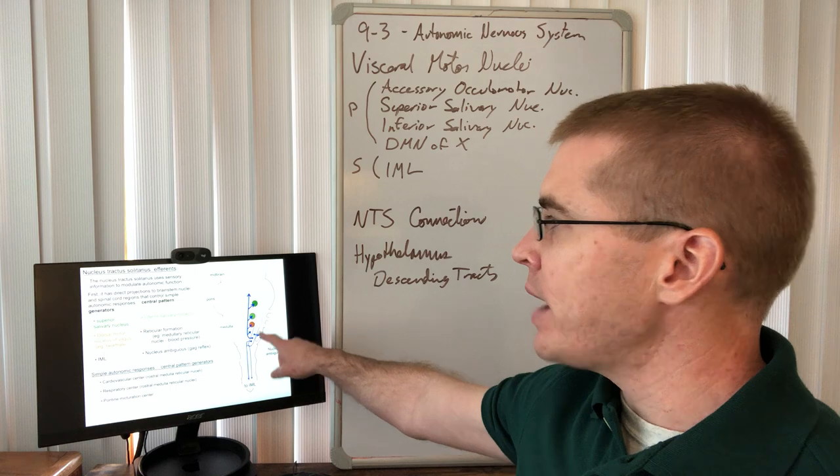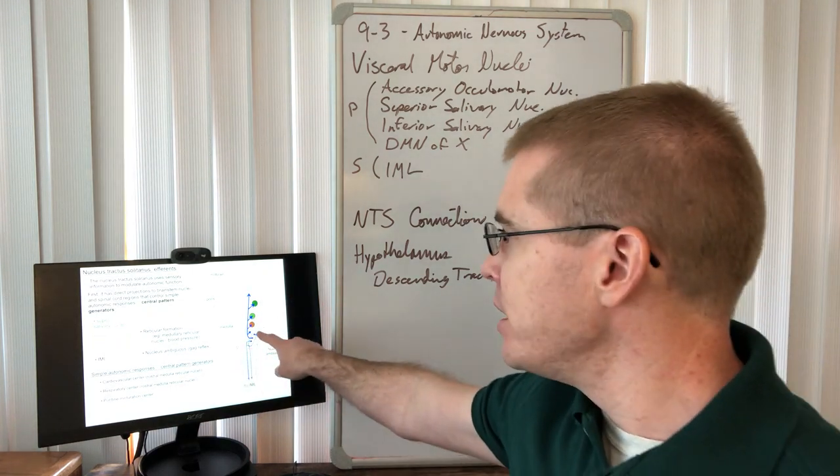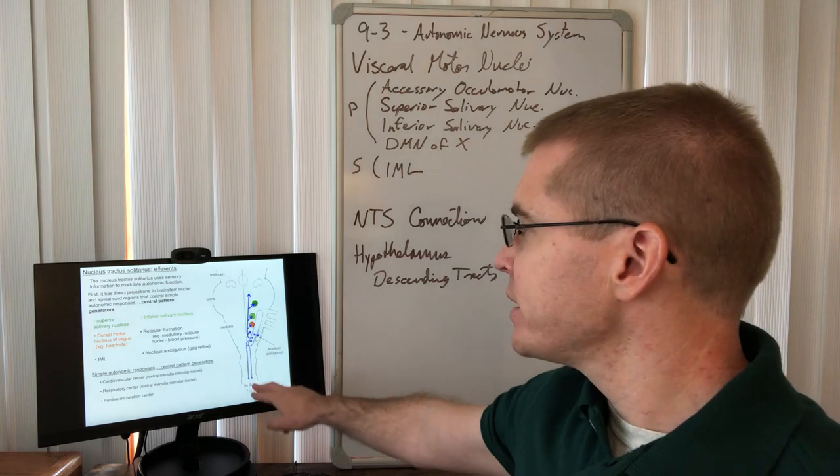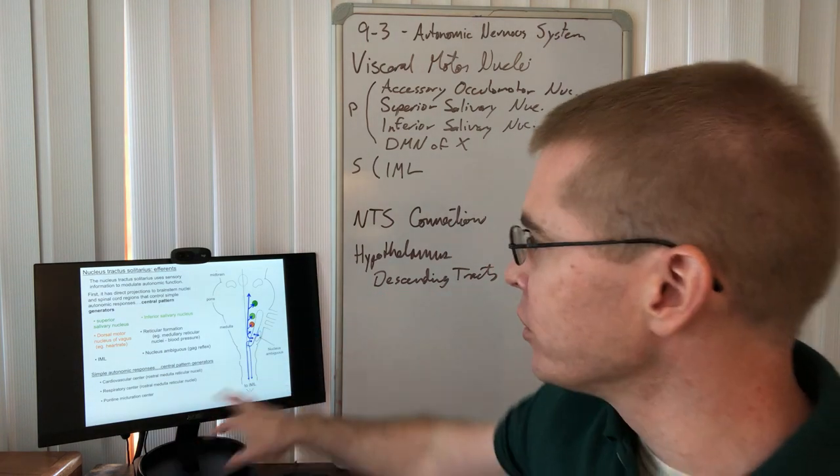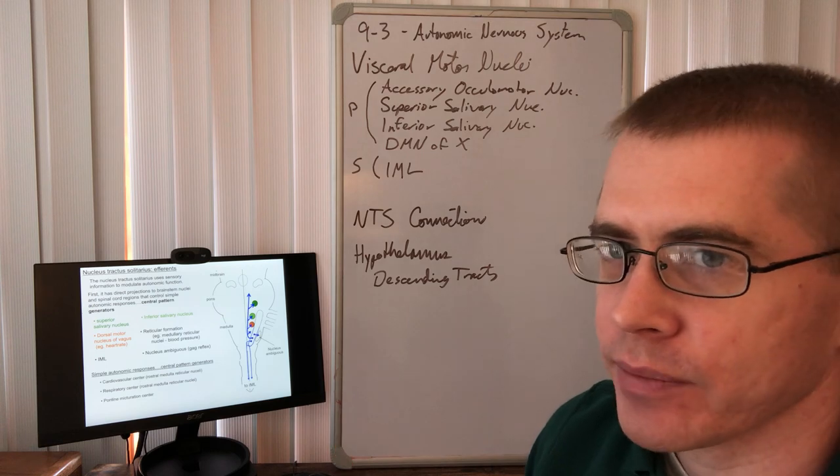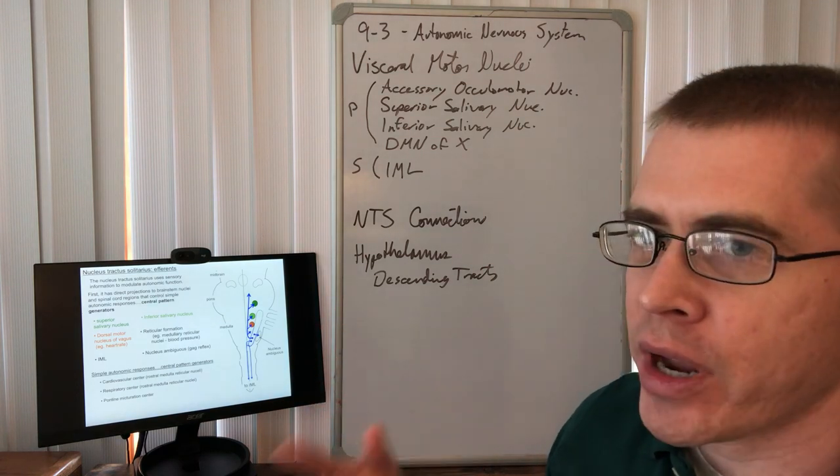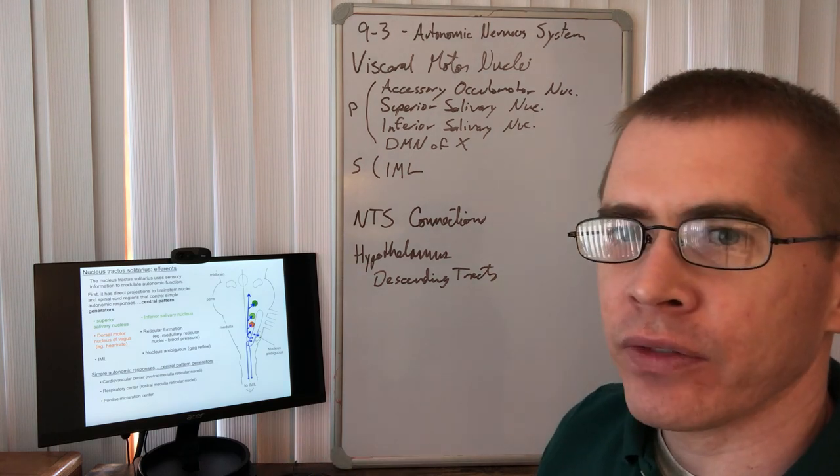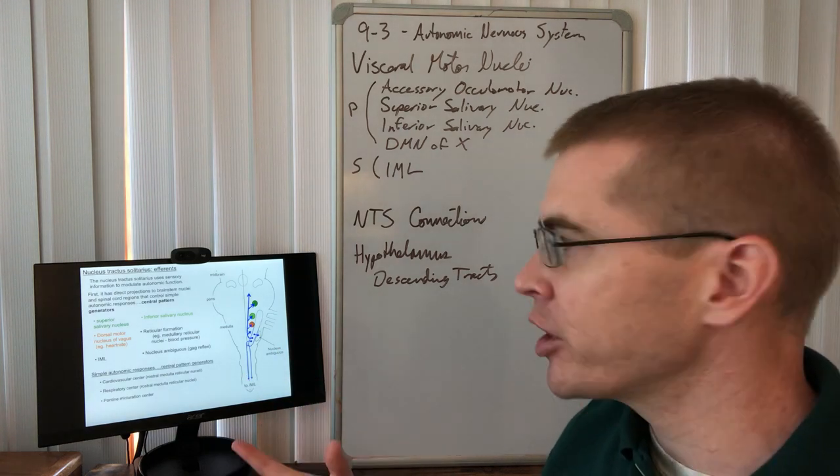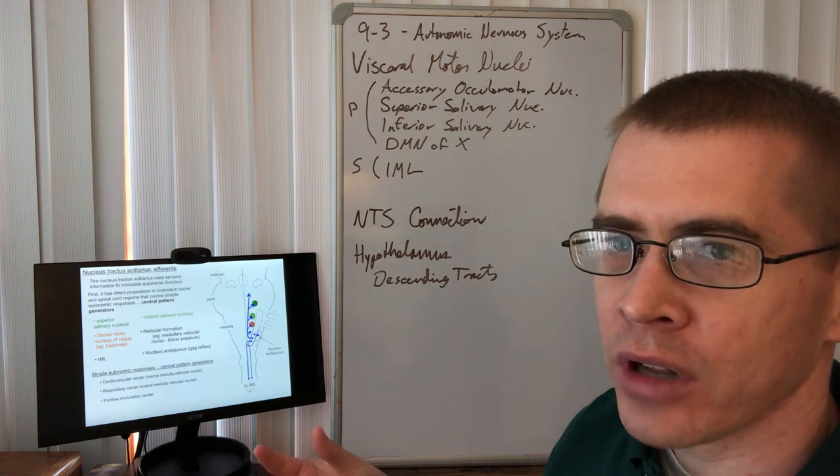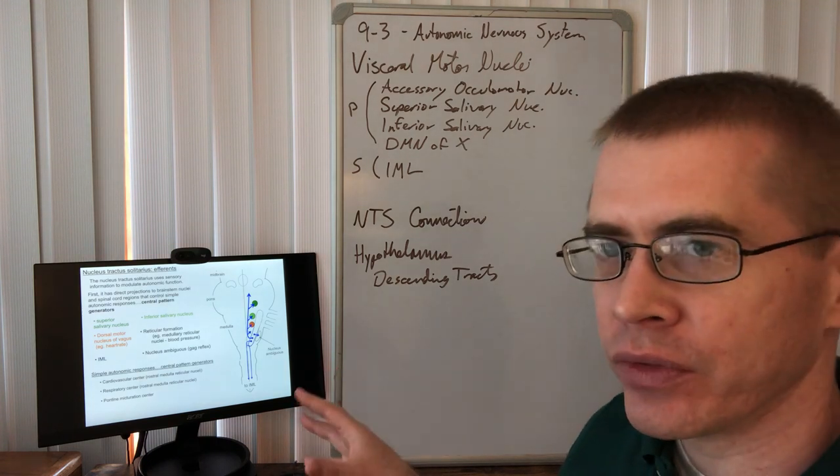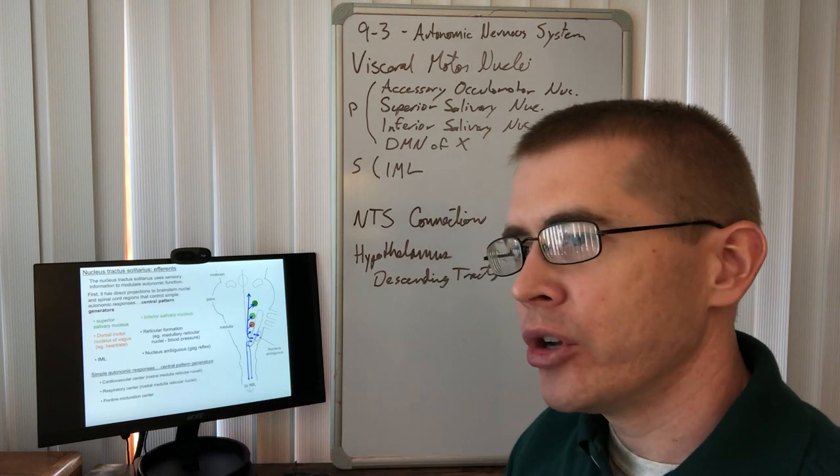Here we see we've received the GVAs in the caudal NTS. Those GVAs have all synapsed in the caudal NTS. Now those neurons within the NTS, within that nucleus, send projections to various different locations. In so doing, they regulate a number of different autonomic functions. These autonomic functions include things like salivation and digestion, wakefulness and blood pressure, arousal, activity levels, as well as regulating some smooth muscles via the IML and the nucleus ambiguus.